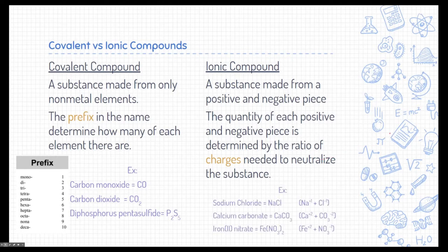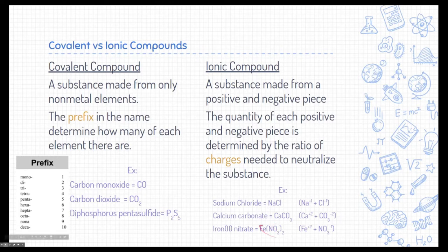Sodium chloride is made from sodium, which is a positively charged metal piece, and chlorine, which is a negatively charged piece. Sodium is positive one and chlorine is negative one — their charges cancel each other out, so you only need one of each. Calcium and carbonate: calcium Ca and carbonate CO3 each have charges of plus 2 and minus 2, so they cancel. Iron 2 means iron has a charge of plus 2, and nitrate NO3 has a charge of minus 1, so we need two nitrates to cancel out the one iron. The formula is Fe(NO3)2.